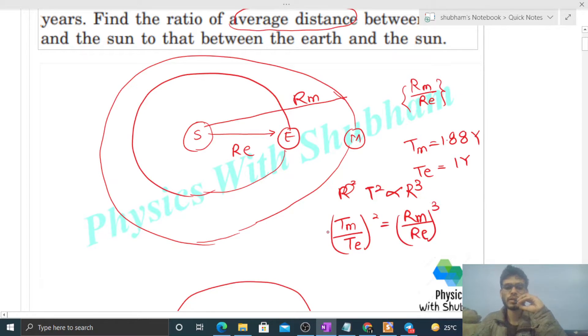So TM is 1.88 divided by TE is 1, its square will be this. So from here you will get the value of RM by RE, that is nothing but 1.88 rise to the power 2 by 3.